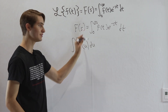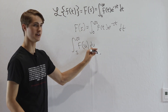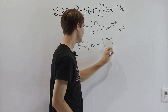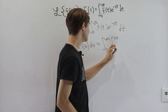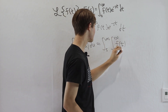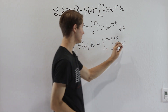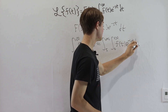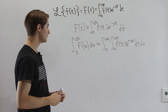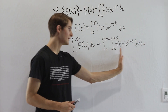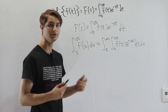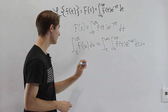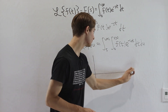F(u) is the same function as F(s) but with a renamed variable. The integral from s to infinity of F(u) du equals the integral from s to infinity of the integral from 0 to infinity of f of t times e to the negative ut dt du. Now we need to figure out what the right side equals, and to do that we want to switch the order of integration, so let's examine the region we're integrating over.